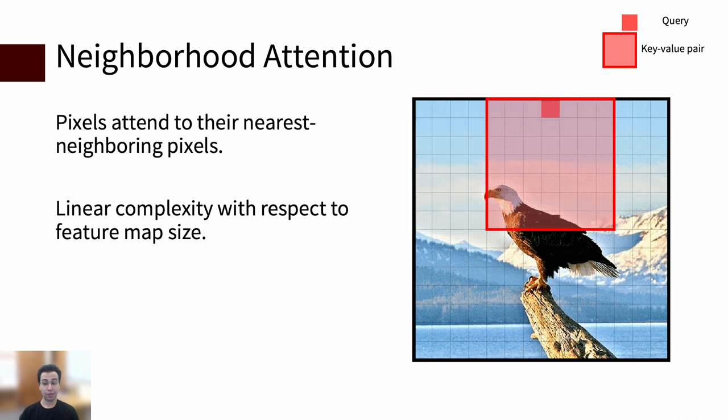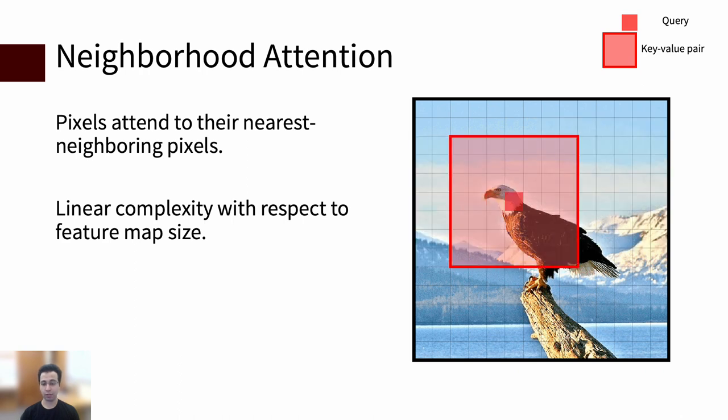In this paper, we propose neighborhood attention, a localization of self-attention with linear time complexity with respect to input size. The animation on the right depicts a 14 by 14 feature map, and neighborhood attention with window size 7. Instead of each query attending to all keys as in self-attention, it's restricted to its nearest neighbors.